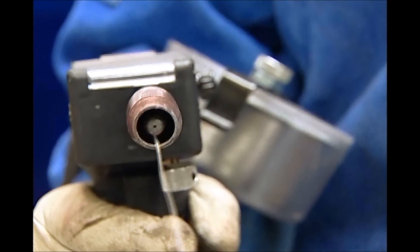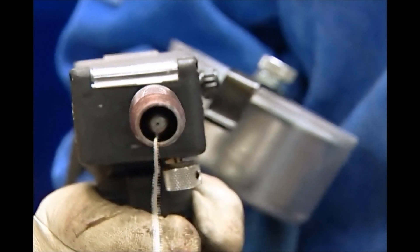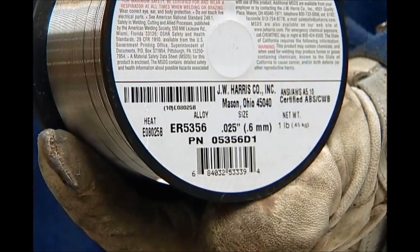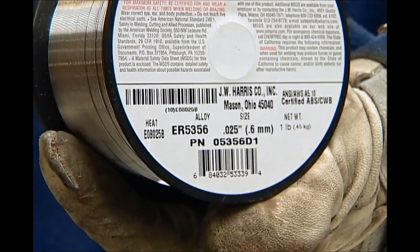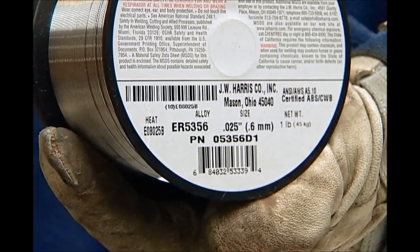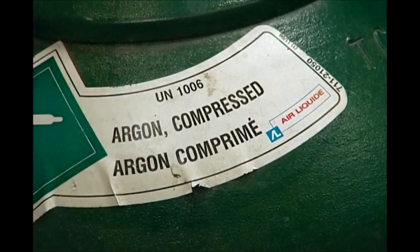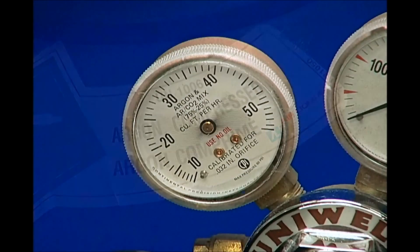For this demonstration, the welder is an AMH Ultrameg 200. The wire is 0.6 ER5356 aluminum alloy. The shielding gas is 100% argon at a flow rate of between 20 to 30 cubic feet per hour.